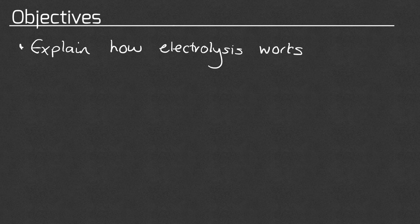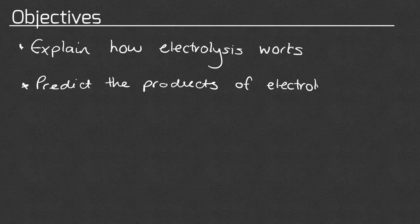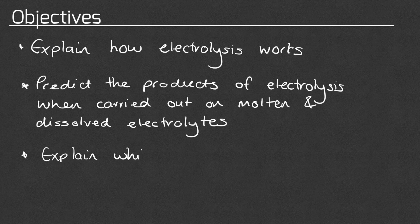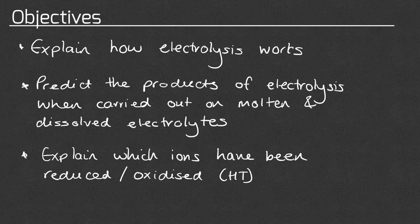In this video on electrolysis, we are going to explain how the process of electrolysis works, predict the products of electrolysis for both molten and dissolved electrolytes, and explain which ions have been reduced or oxidised — which you really need to do if you are studying the higher tier course.